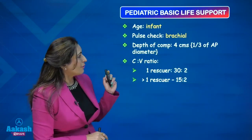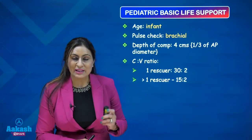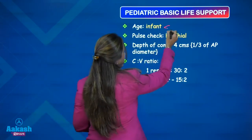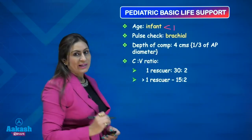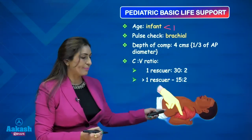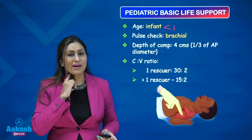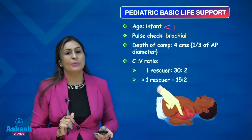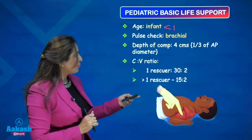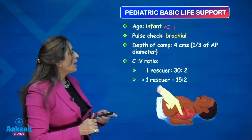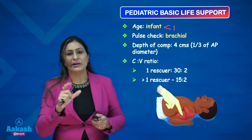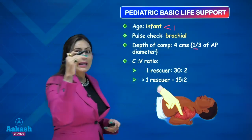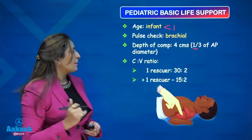For basic life support in an infant — that is, less than 1 year — the recommended pulse check is the brachial pulse check, because these children have very short necks, making carotid palpation difficult. The depth of compression is approximately 4 centimeters, or one third of the AP diameter of the patient.